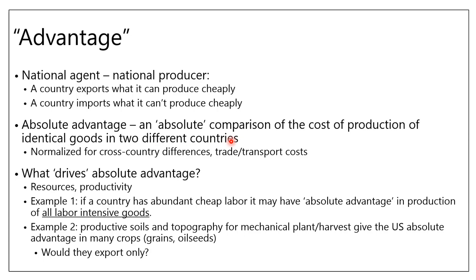For example, if food is cheaper to produce in the US than in Canada — controlling for transport costs, exchange rates, and other real price factors — then we have an absolute advantage in food production. Drilling down, the US may have absolute advantage in many agricultural products while Canada, with shorter seasons and different soils, may have fewer. What drives absolute advantage? Really just resources and productivity — the resource base, plus the technology and ability to turn those resources into marketable goods.